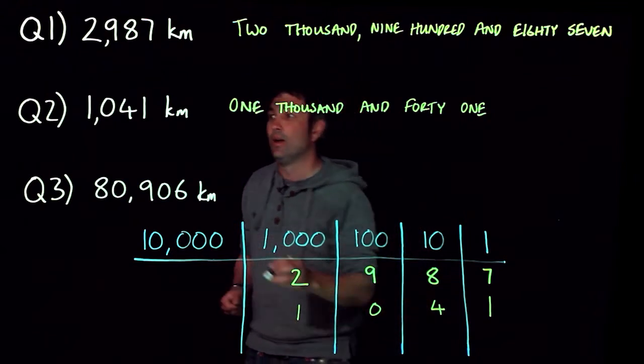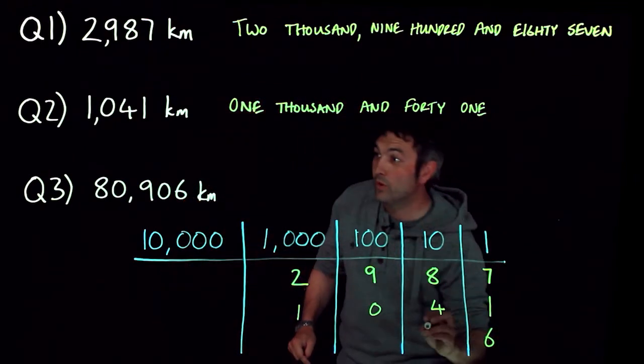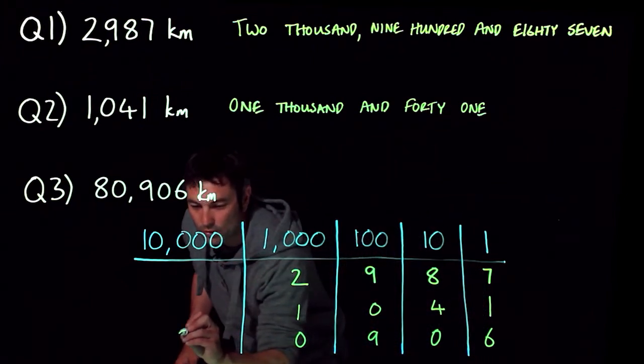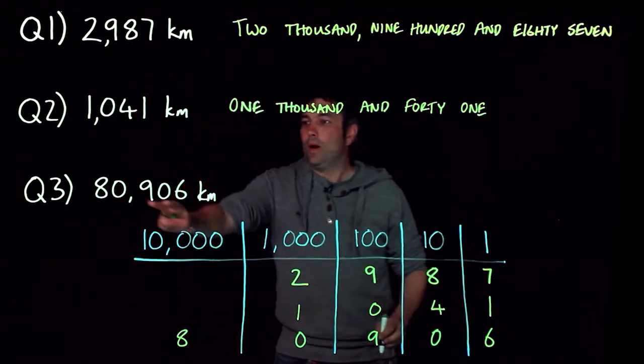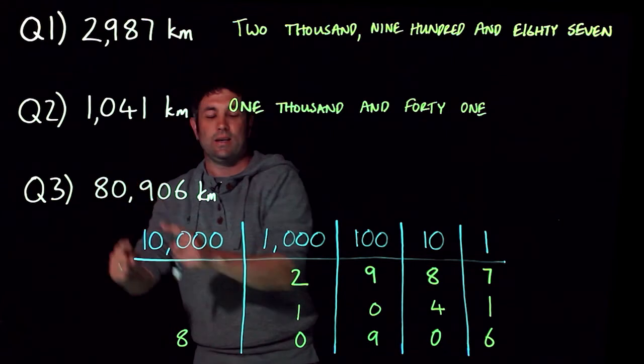Last one. We've got six, zero, nine, zero again, and eight. Where the commas work quite nicely here is that's eighty thousand—eight lots of ten thousand. Eighty thousand.